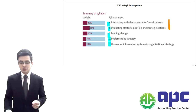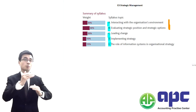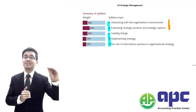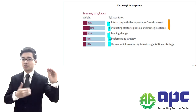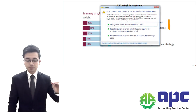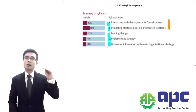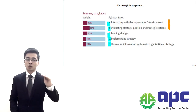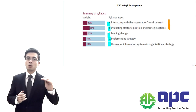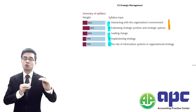For example, strategy includes corporate, business, and operational strategy. Corporate strategy tells us which industry we are in — for example, APC is in the education industry. Business strategy, however, is about how we're going to compete with our competitors, such as lowering our prices, and what the strategic options are within the business strategy.